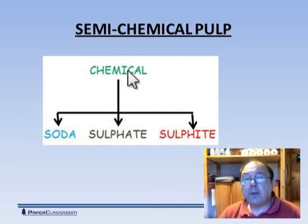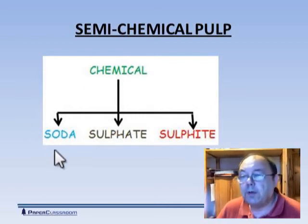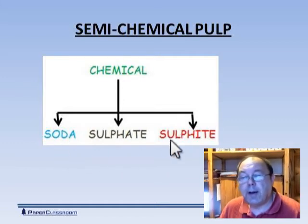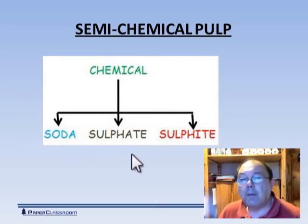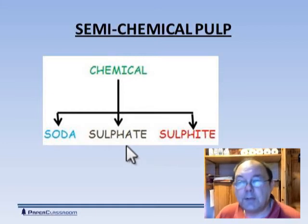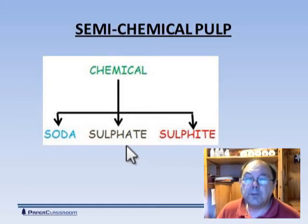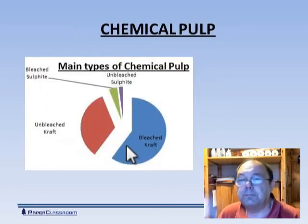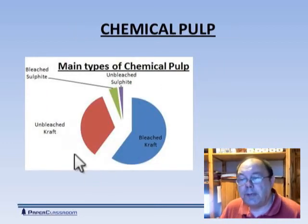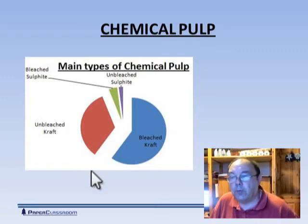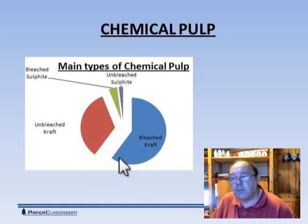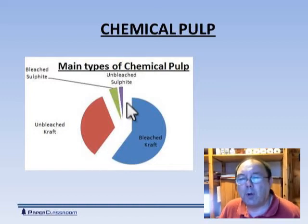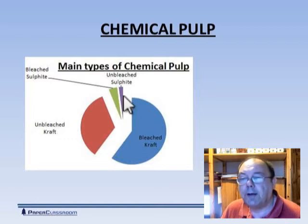Now we move on to chemical pulps. The original pulping method was the soda process, which was replaced by the sulfite process — developed by a Swedish chemist — and that was then replaced by the sulfate process. The sulfate process is also known as the kraft process and is the most widely used process today. This analysis shows production volumes for different types of chemical pulp: by far the largest is bleached kraft, next is unbleached kraft, and sulfite pulping is very small these days.